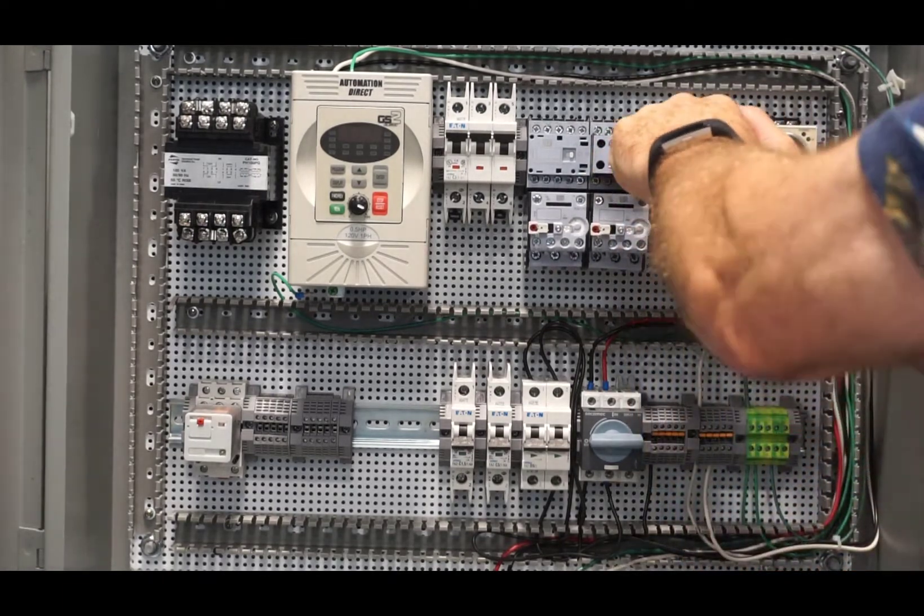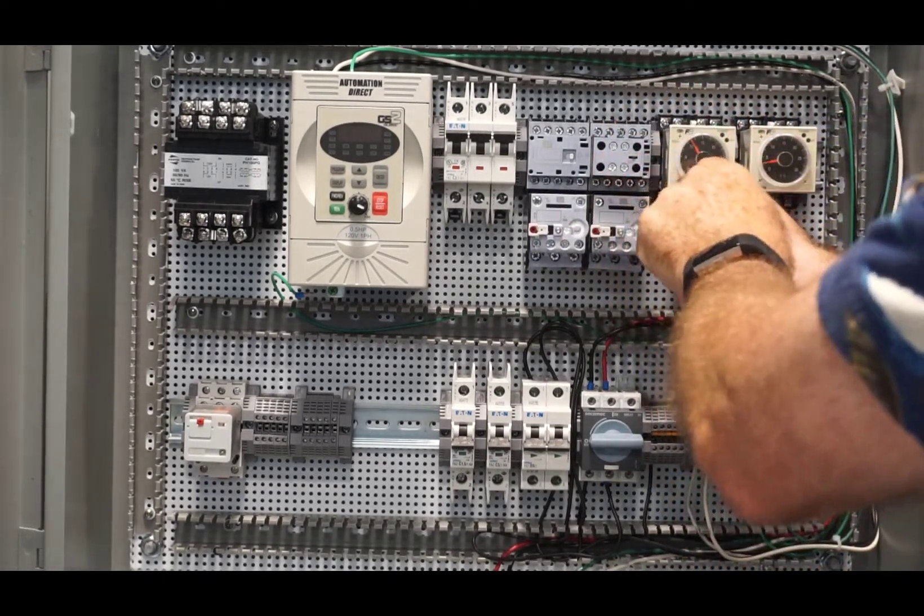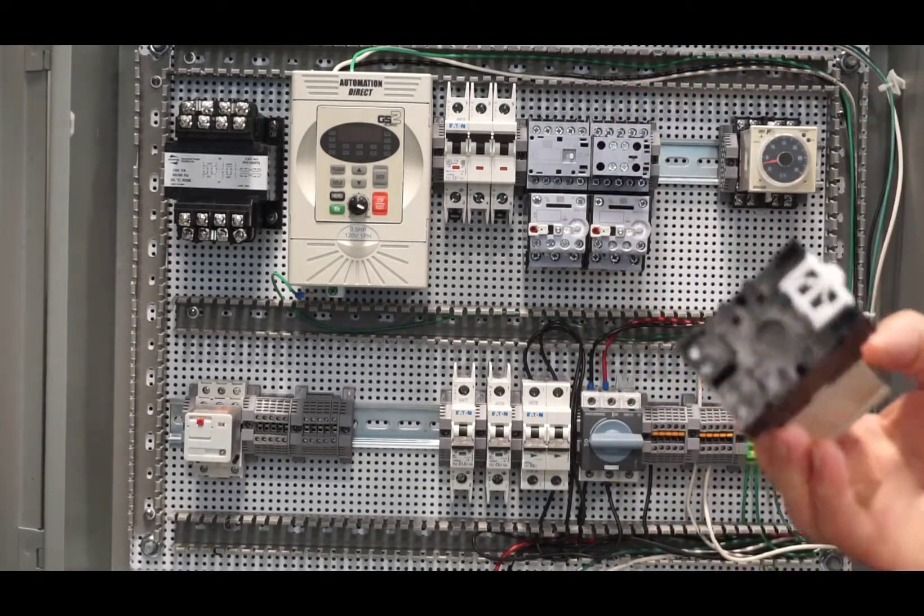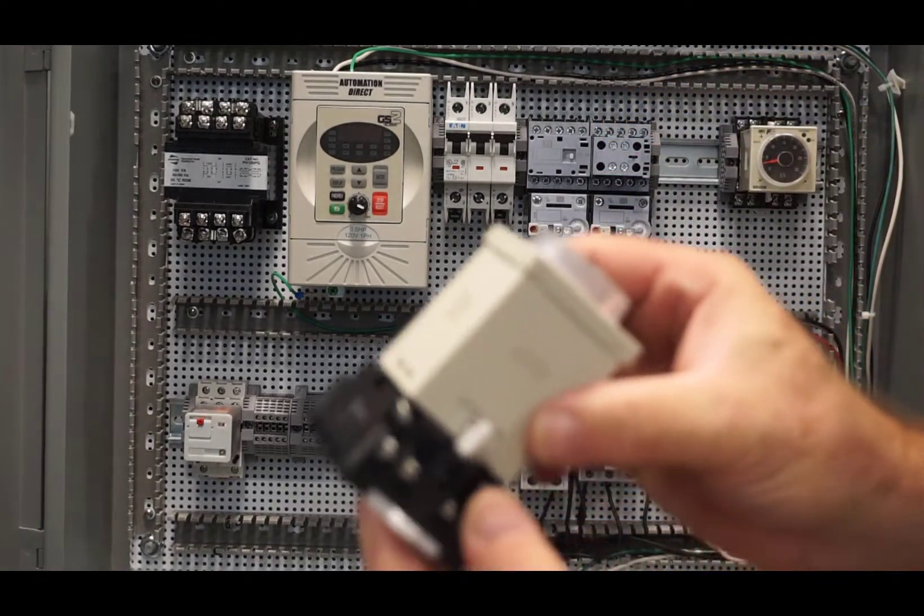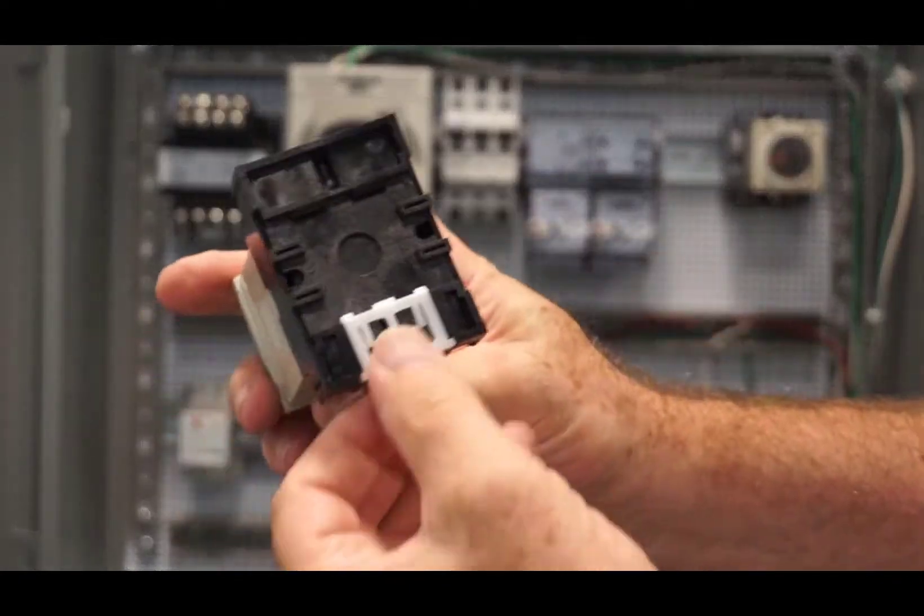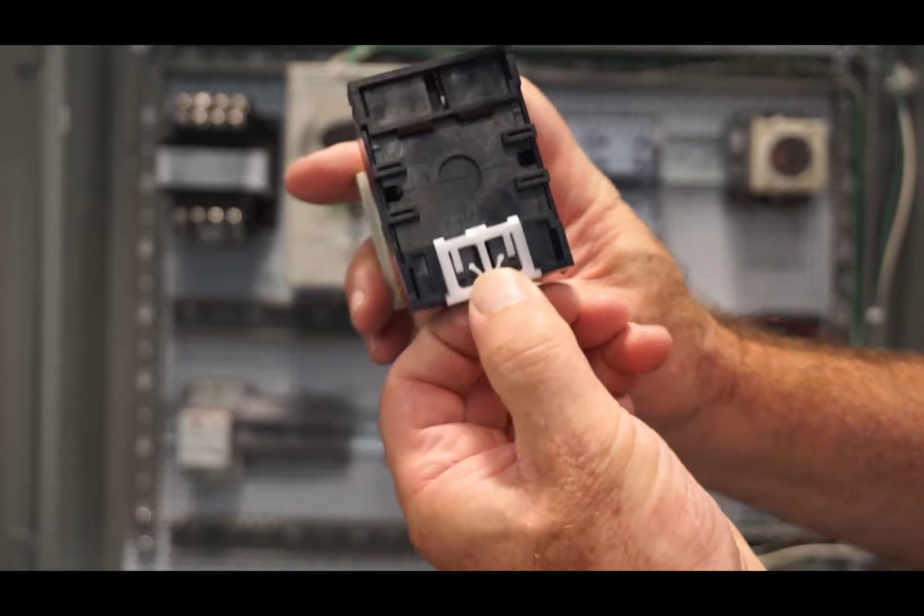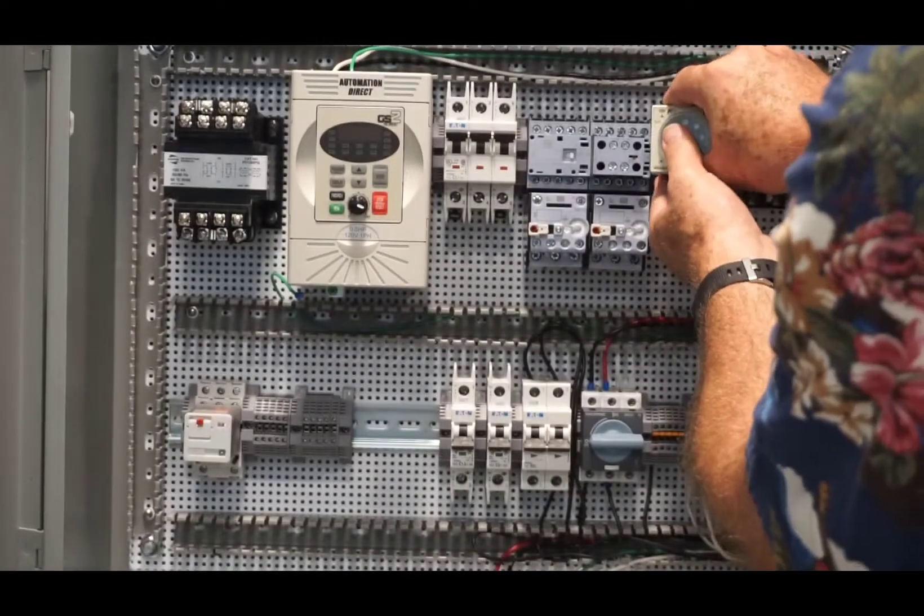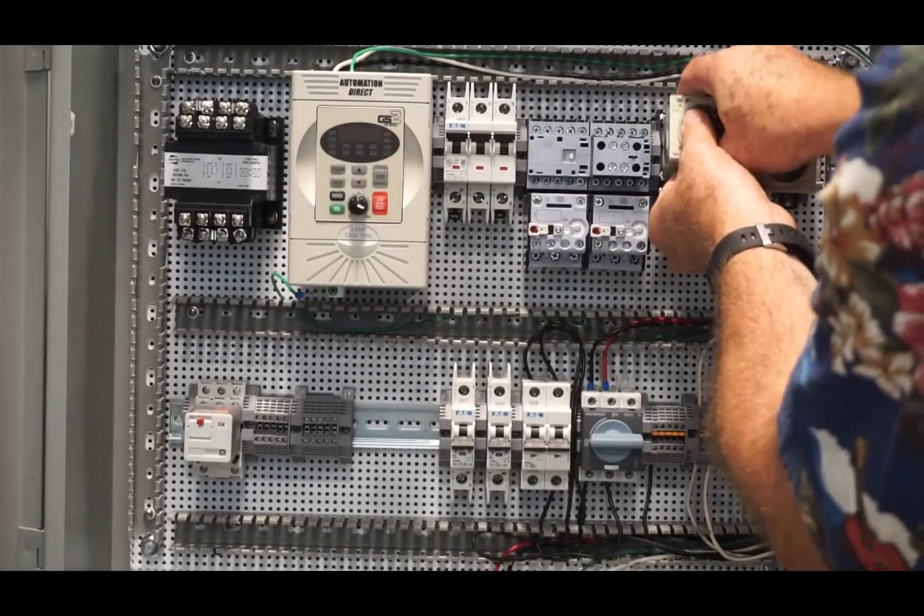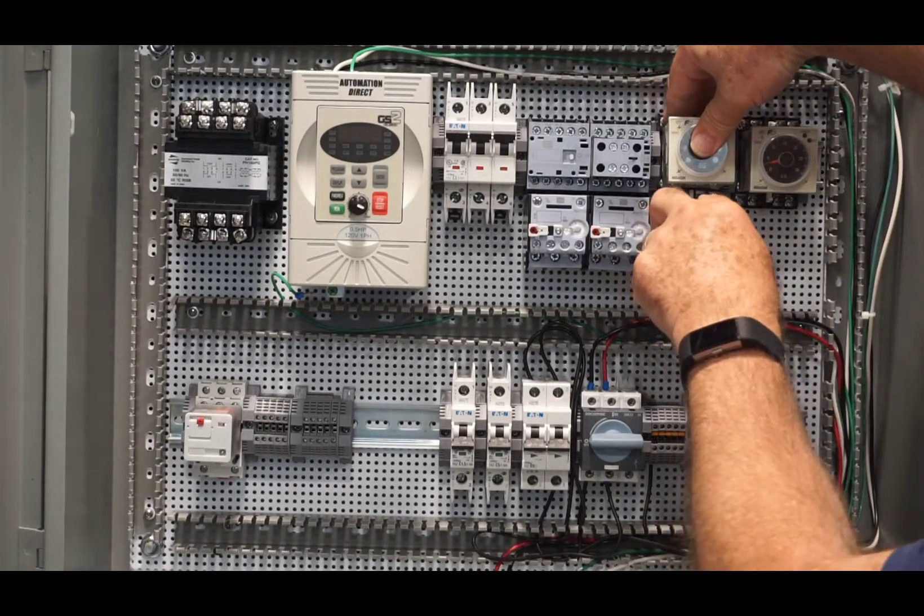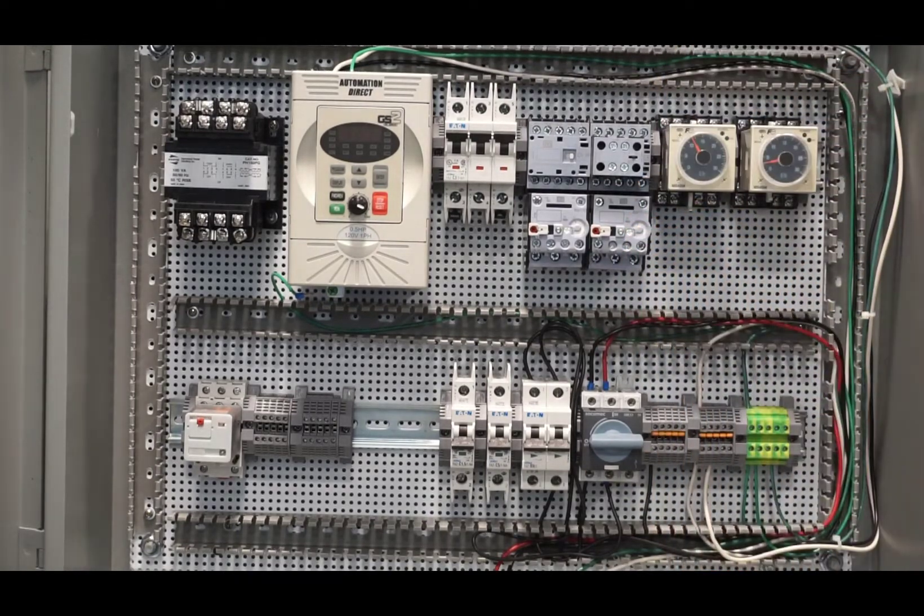Now the timing have sockets and relays, and sometimes they're a little bit more fussy. But again, they have a little tab on the bottom. Pull down on the tab and it releases that socket from the DIN rail. Pop it back in. Sometimes you might have to pull down on the tab to get it to snap in.